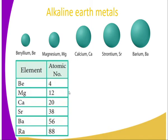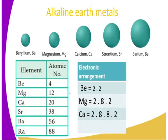The elements have the following atomic numbers: beryllium is 4, magnesium 12, calcium 20, strontium has atomic number 38, barium has 56, and radium has got 88.